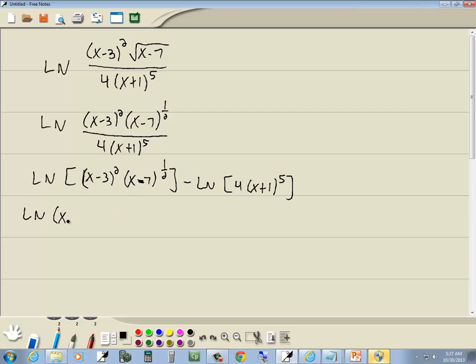So we're going to have natural log x minus 3 squared plus ln x minus 7 to the 1 half minus, and now I'll put a parenthesis here. This minus has to affect everything that follows it. And over in this bracket, the main thing that's happening is multiplication again. We've got 4 times x plus 1 to the fifth. So multiplication becomes addition, so we'll have ln of 4 plus natural log of x plus 1 to the fifth.